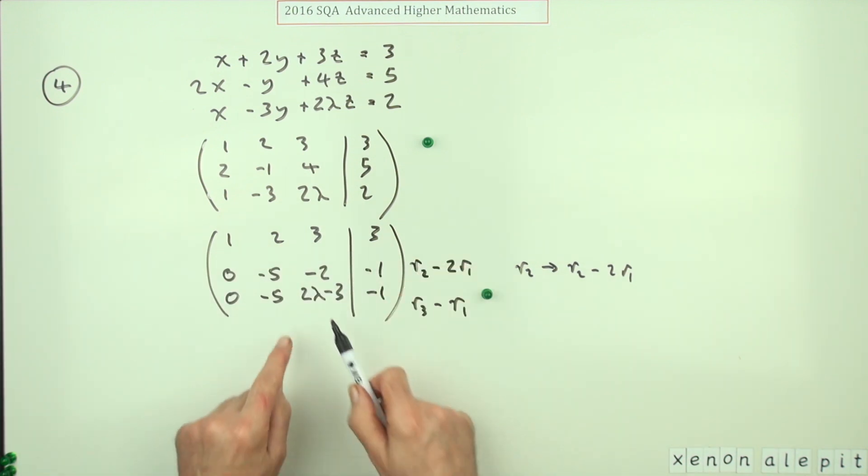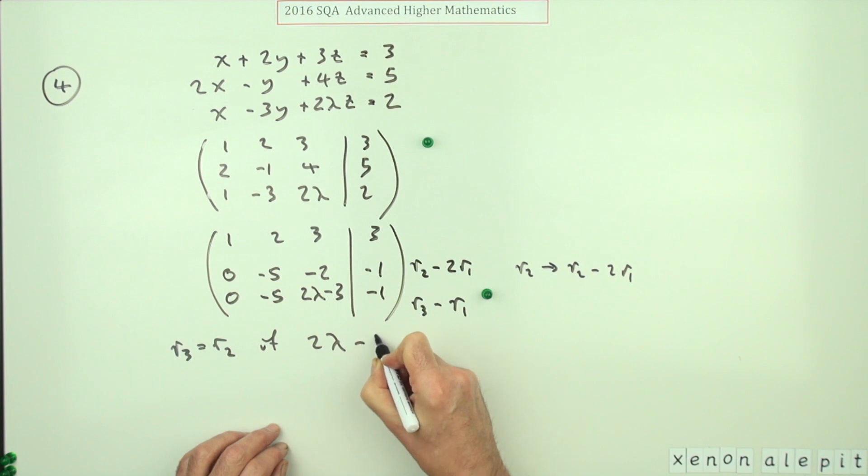However, getting those two into zeros gave you the second mark. Now it just depends which way. You could spot it straight away and say, 'Ah look, I've got a redundancy if that equals negative two,' or you could state it this way: row three is equal to row two if two lambda minus three equals negative two. Doing that gets you a mark, and then it's just a simple matter of getting the answer after that. That goes to lambda equals one divided by two, lambda equals a half.